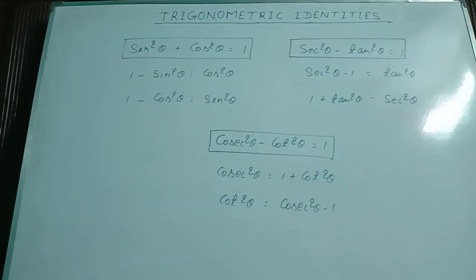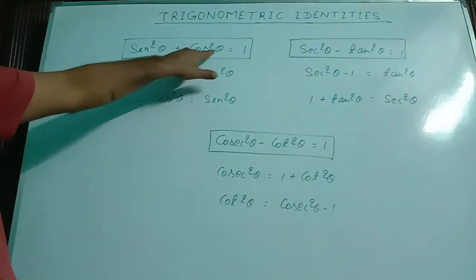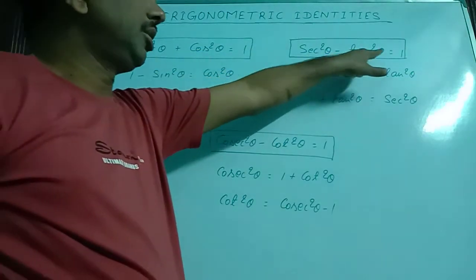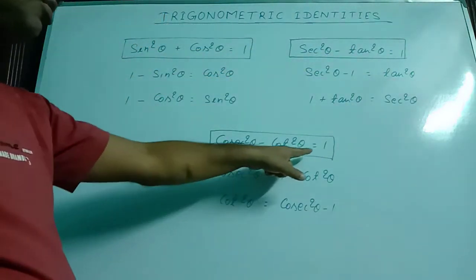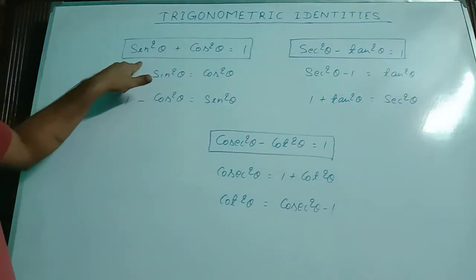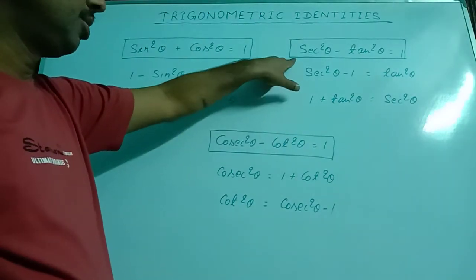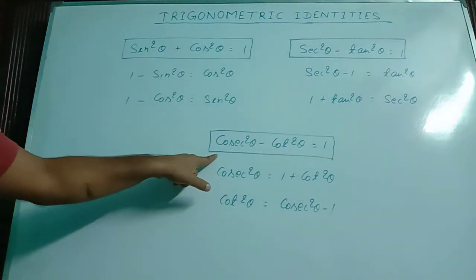Let us see a few more formulas. There are three main formulas: sin square theta plus cos square theta equal to 1; sec square theta minus tan square theta equal to 1; and cosec square theta minus cot square theta equal to 1. These two are the derivations of the first formula. Similarly, these two are the derivations of the second main formula, and these two are the derivations of the third main formula.